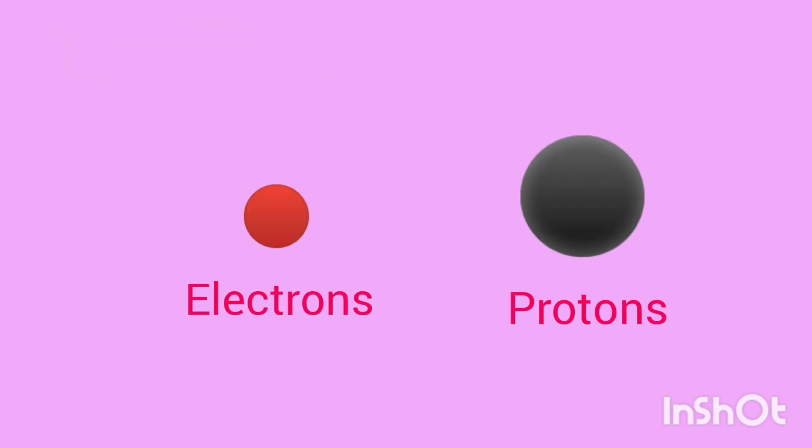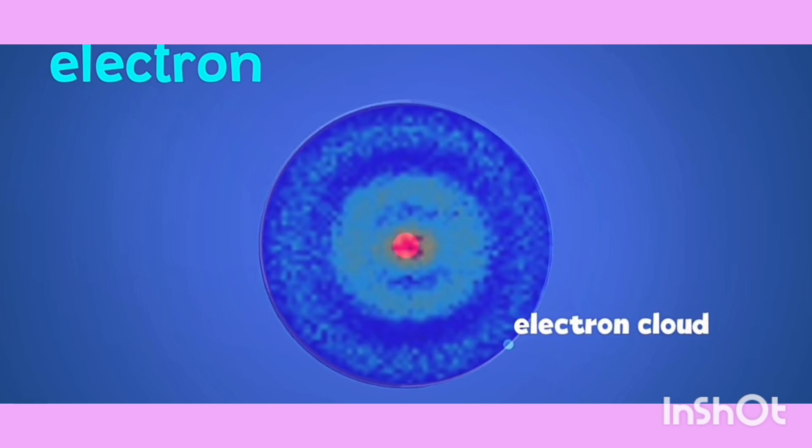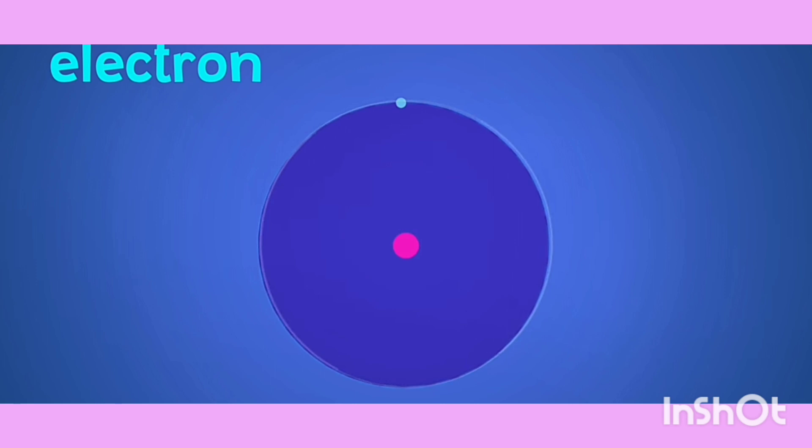Now, let's talk about electrons. Electrons are much smaller than protons. They zip around the protons at lightning speed, making something called an electron cloud. Electrons do this because they have a negative charge, which always pulls towards the proton's positive charge.